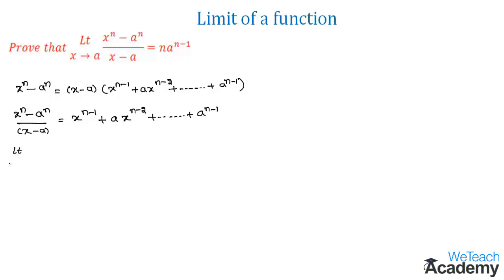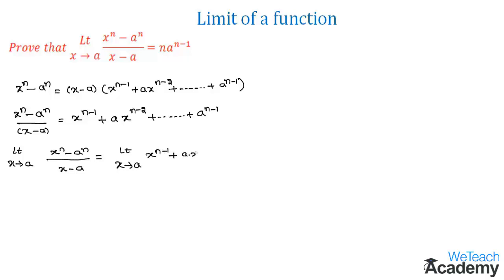So we get limit x tends to a of x power n minus a power n divided by x minus a is equal to limit x tends to a of x power n minus 1 plus a into x power n minus 2 plus so on plus a power n minus 1.